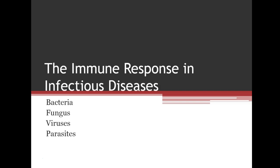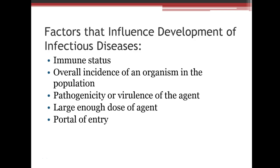Some of the factors that influence the development of infectious diseases include your immune status. If somebody is immunocompromised — if they have HIV, or are a cancer patient receiving treatment — they're obviously going to have a hard time fighting off infection. Also, the overall incidence of an organism in the population matters. Vaccines have caused a decline in some diseases, but if the organism is more prevalent, like the flu during flu season, it increases your chance of getting it.